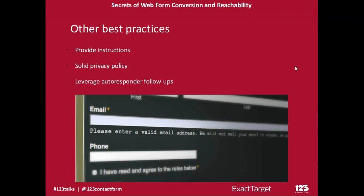Some other best practices I'd like to highlight are providing instructions under each form field. You can see in the image that you're asked to enter an email address. It's quite helpful to have a small text below the field like: 'Please enter a valid email address. We will not sell your email to anyone.' This gives your form user a different view on the submission — they gain trust because you won't sell their email address and they'll quickly enter it without reconsidering. Other tips include adding a link to a solid privacy policy, and you should definitely follow up with an email.